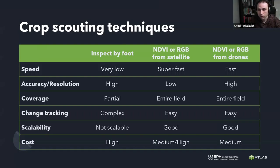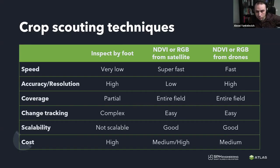The first and traditional method is to inspect everything by foot. The other method is to obtain satellite imagery, and the third method is using drones. Each method has pros and cons, so let's compare — that will give us a better understanding of which cases technology can really bring some benefits and in which cases traditional methods may still work well.